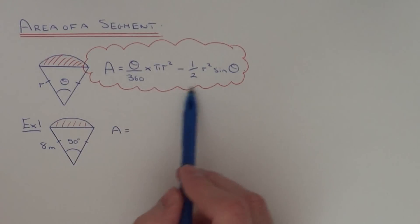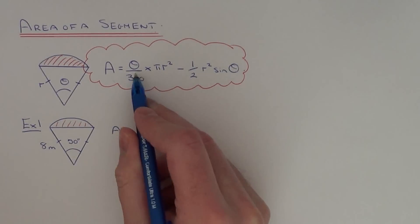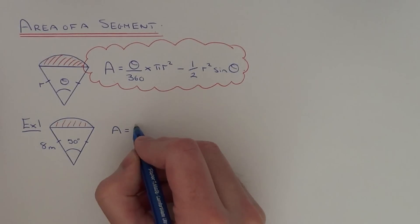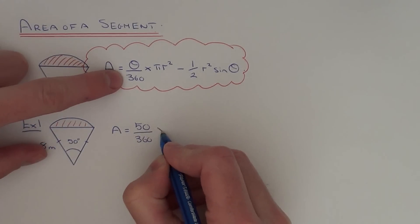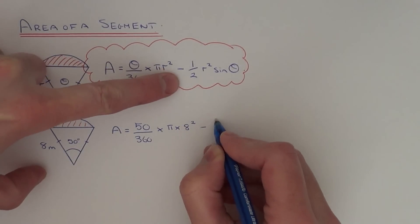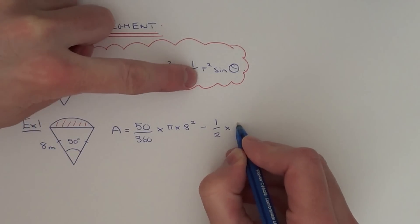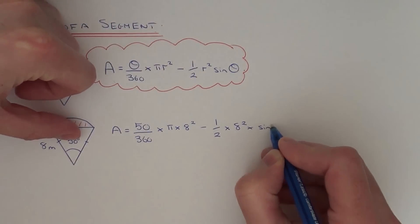So let's apply this formula to the example here. So we've got a radius of 8 meters and we've got an angle theta of 50 degrees. So let's substitute these numbers into this formula here. So it would be 50 over 360 times pi times the radius squared minus a half times 8 squared times sin the angle.